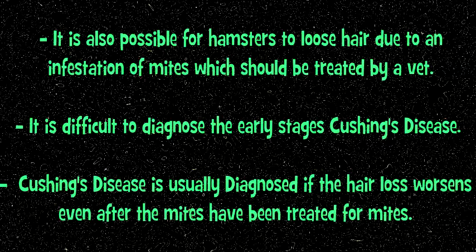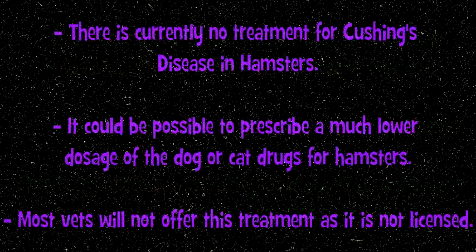Therefore, it is difficult to diagnose early stages of Cushing's disease in hamsters. A diagnosis of Cushing's disease is usually given if the hair loss worsens even after the mites have been treated, with the result of a skin scrape being negative for mites.